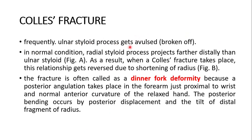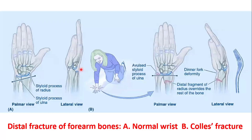Frequently, the ulnar styloid process gets involved and is broken off. In normal condition, the radial styloid process projects further distally than the ulnar styloid process. As a result, when a Colles' fracture takes place, this relationship gets reversed due to shortening of the radius. You can see the normal wrist: the styloid process of the radius projects more distally than that of the ulna.